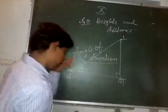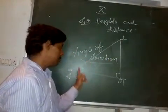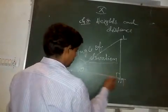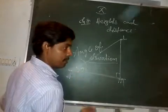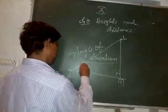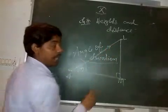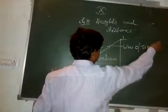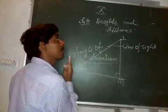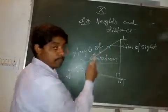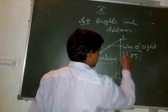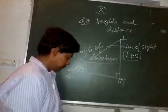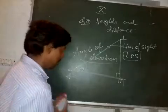You have to understand what the angle of elevation is. When you are looking up like this, you are making the angle of elevation. This is basically the angle between the horizontal ground and the direction you are looking up. The line along which you look is called the line of sight — written in short as L-O-S. The angle of elevation is always in this upward direction: the angle that the line of sight makes with the horizontal when you are looking up.